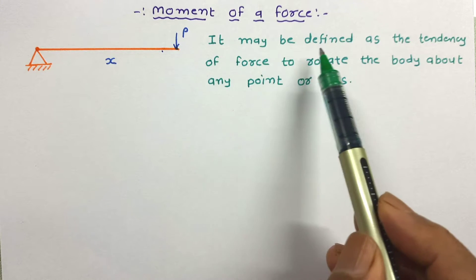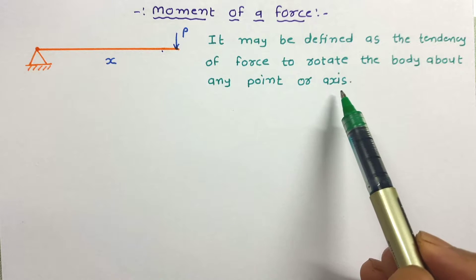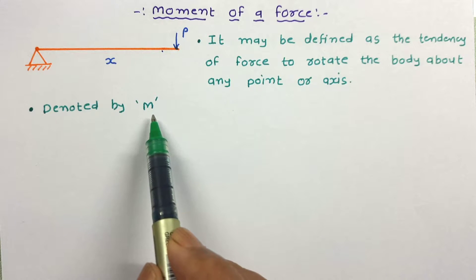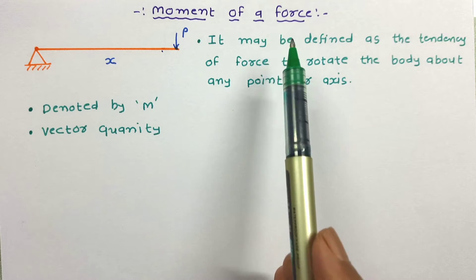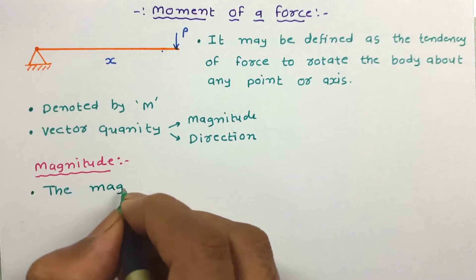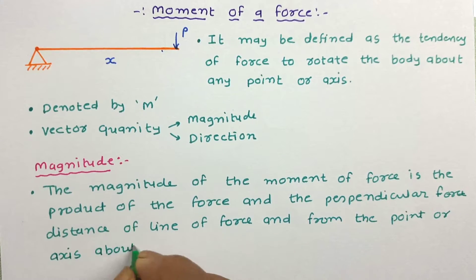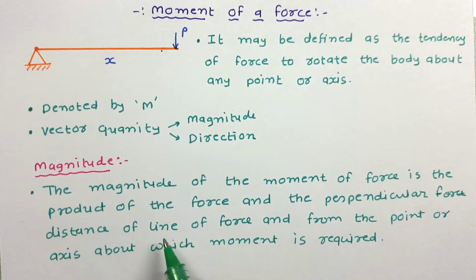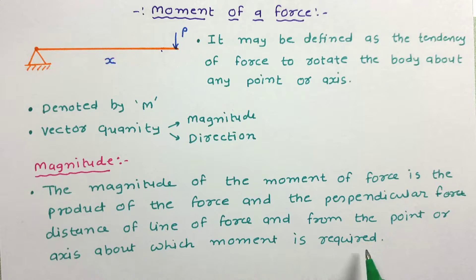Moment of a Force may be defined as the tendency of force to rotate the body about any point or axis. This moment of a force is denoted by capital M. It is a vector quantity. To completely describe the moment of force, we need its direction and magnitude. The magnitude of moment of force is the product of force and perpendicular distance of the line of force from the point or axis about which the moment is required.